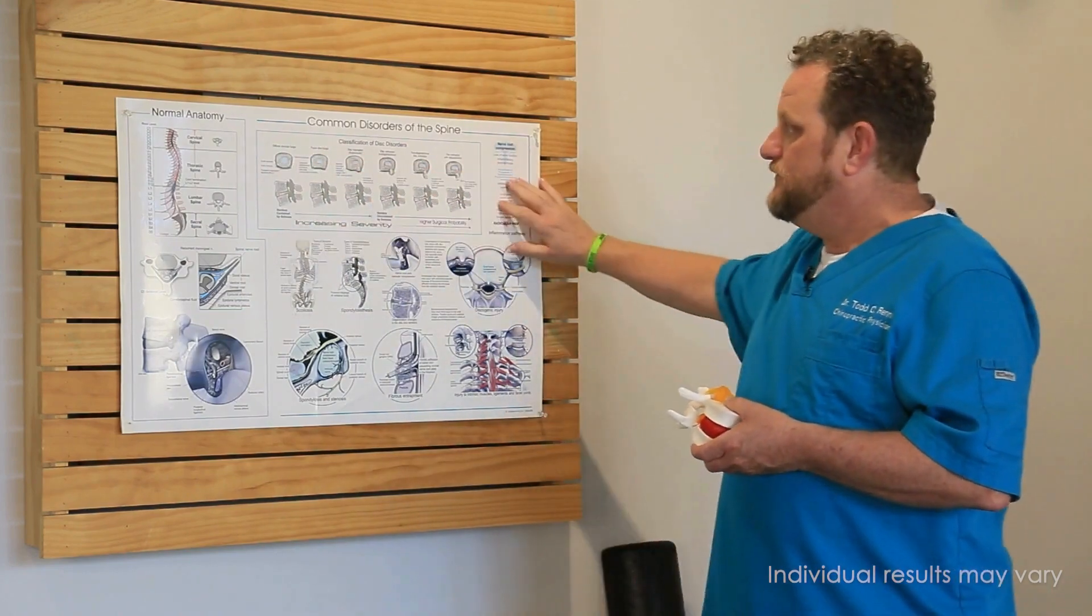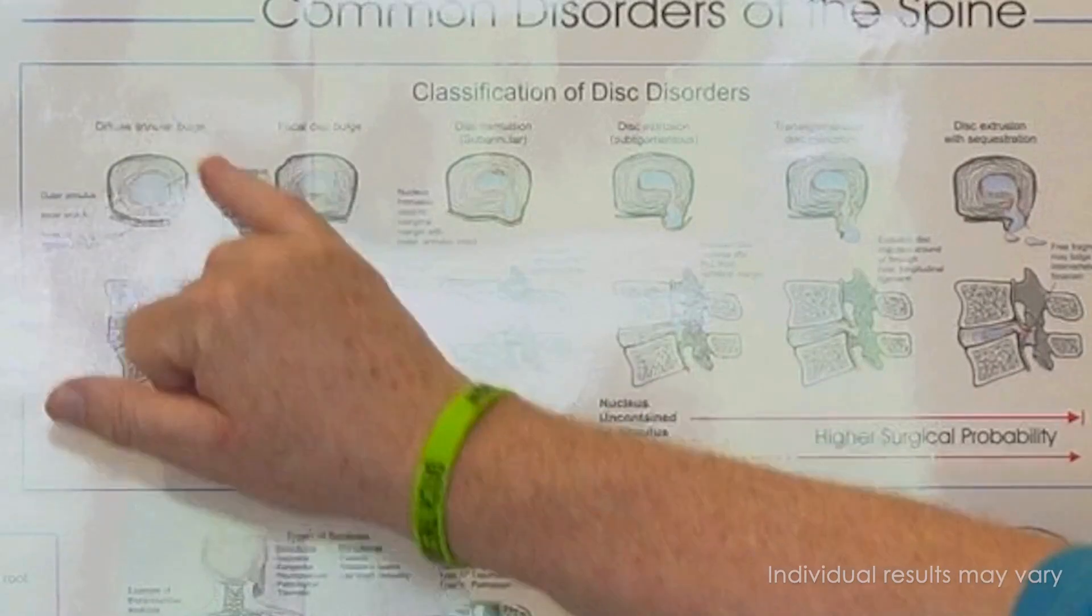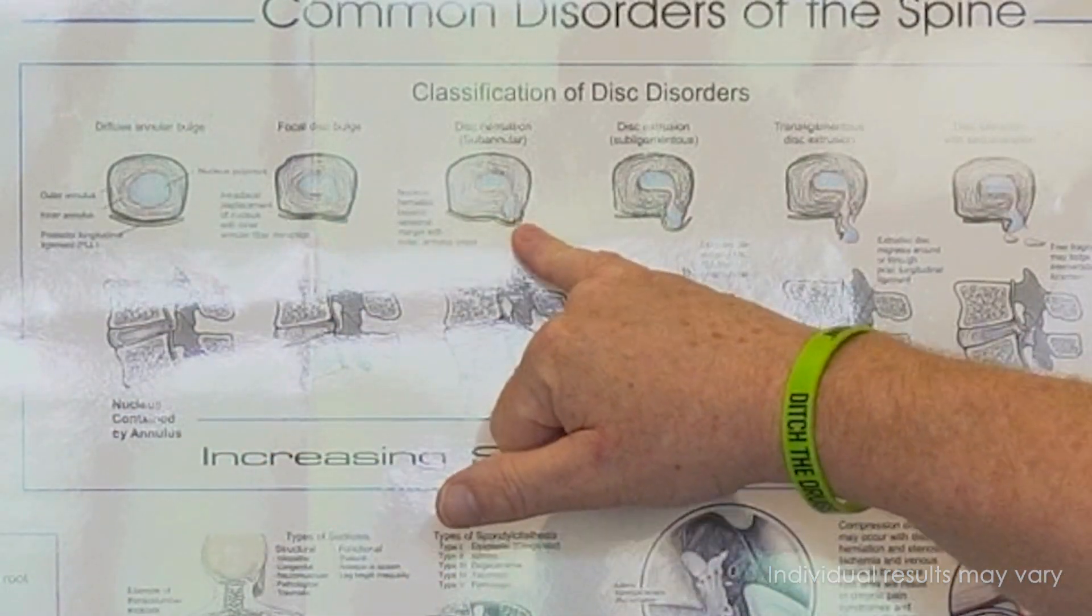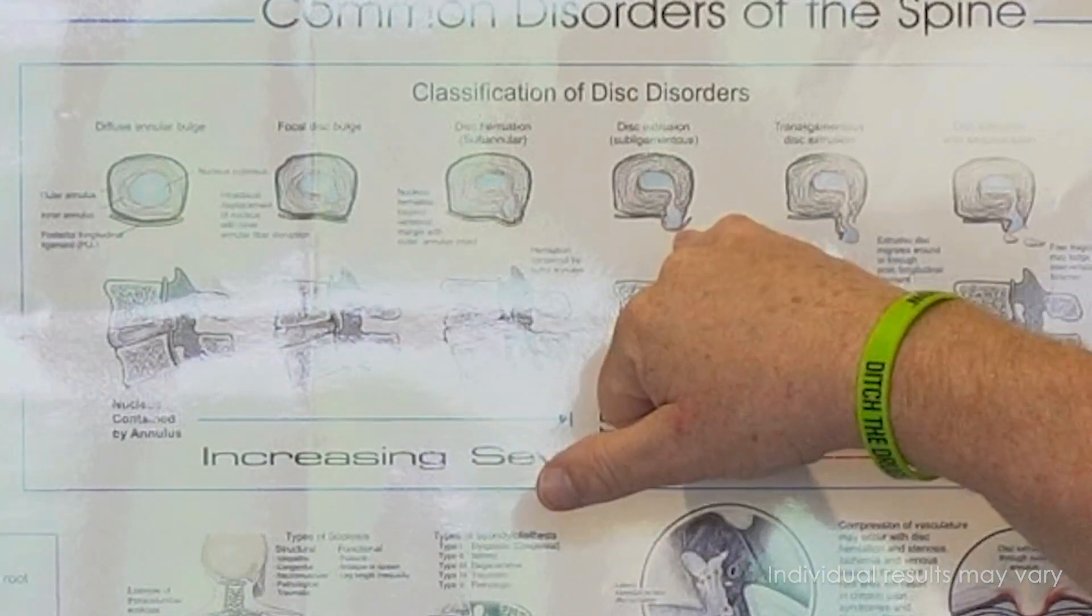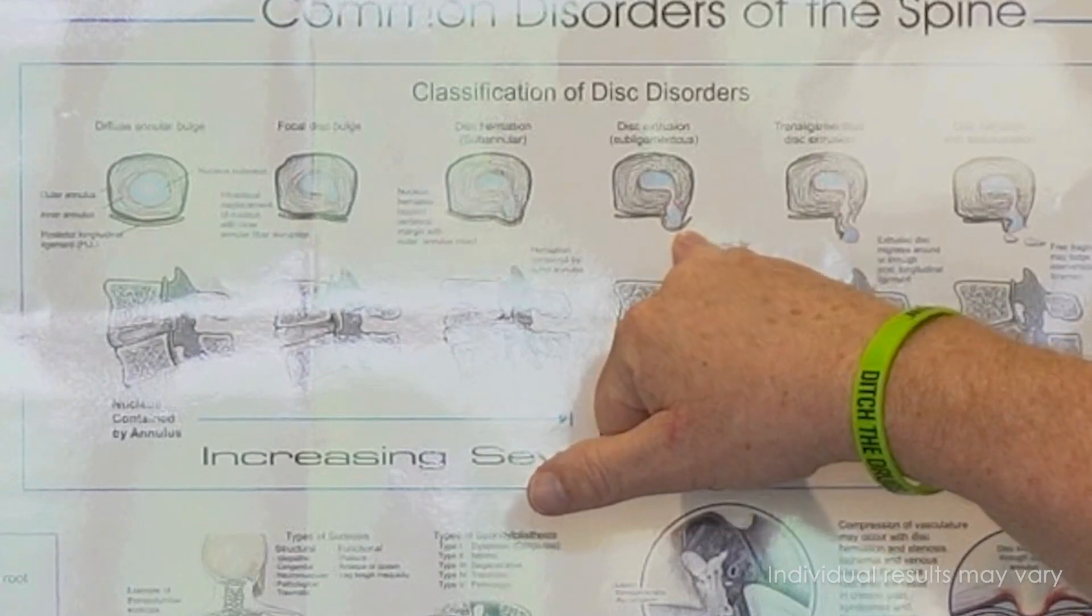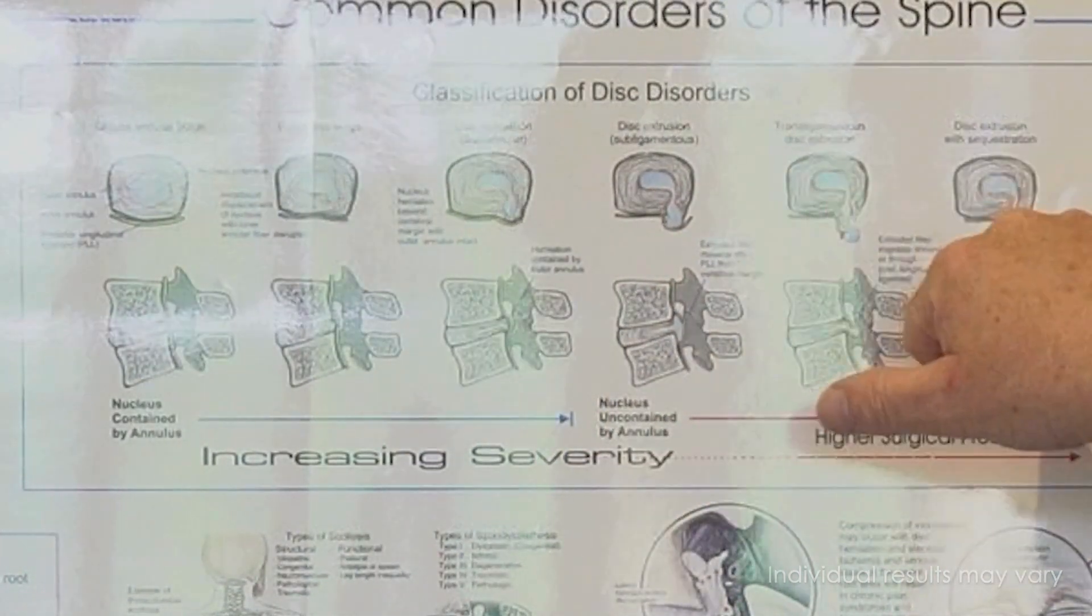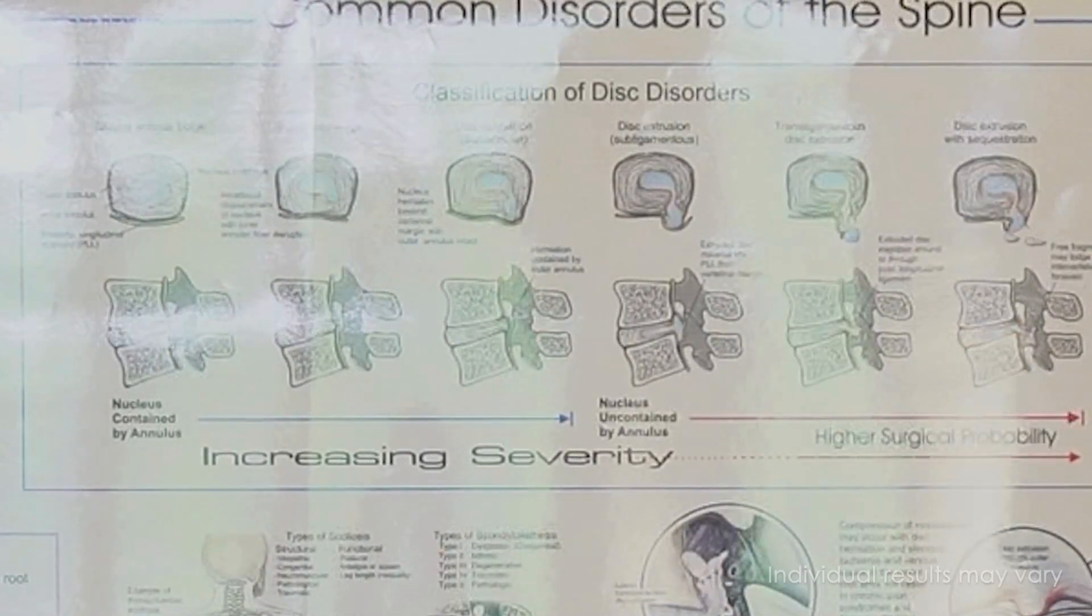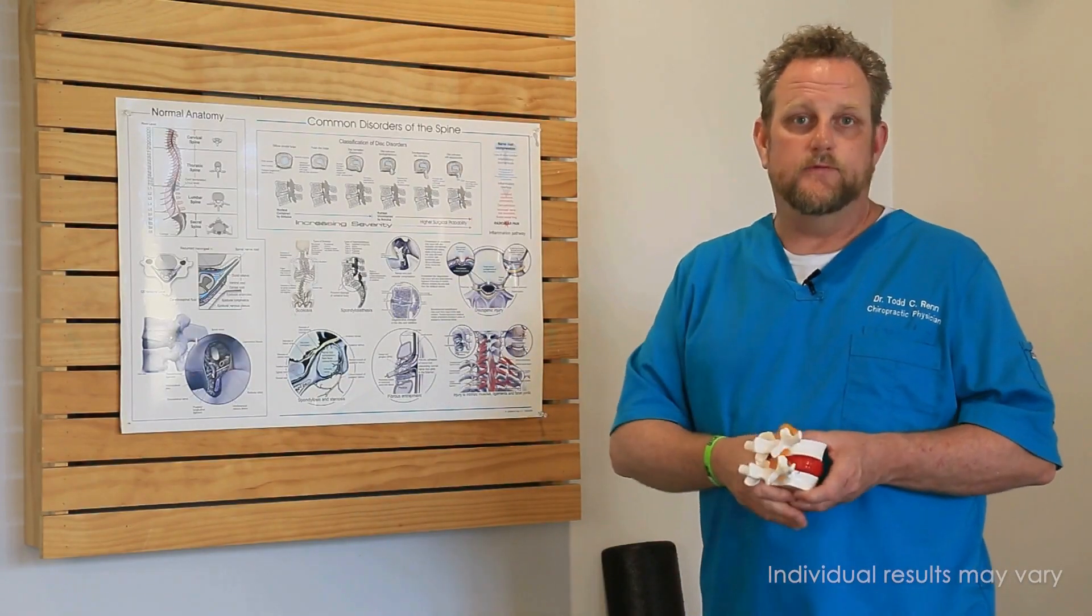If you look at this scale, it shows you can have normal, then bulging, then bulging even more, to extrusion where the disc comes out beyond its margins. It can get worse with different types of extrusion and sequestration where some of it can break off. So there are varying grades, but that's basically what happens.